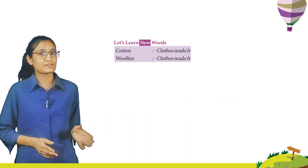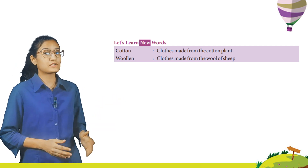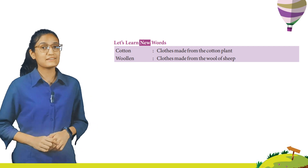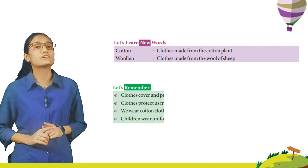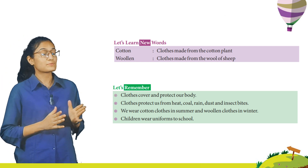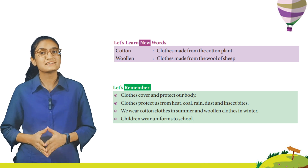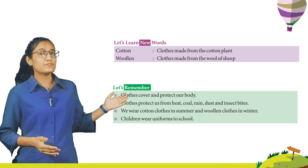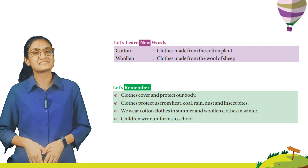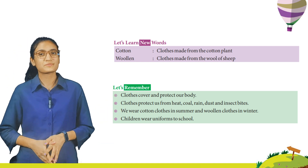Let's learn new words. Cotton — clothes made from the cotton plant. Woolen — clothes made from the wool of sheep. Now let's remember: clothes cover and protect our body. Clothes protect us from heat, cold, rain, dust and insect bites. We wear cotton clothes in summer and woolen clothes in winter. Children wear uniform to school.